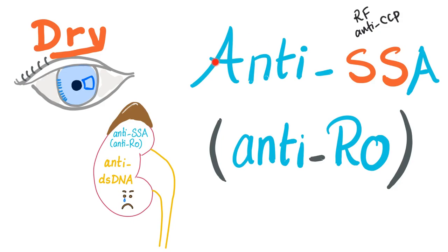Where do you think we're going to find antibodies against SSA? In a patient with Sjögren syndrome — brilliant. Sjögren syndrome: triad of dry eye, dry mouth, and arthritis. Also, anti-SSA are associated with kidney disease, as we will discuss now. With that being said, let's get started.